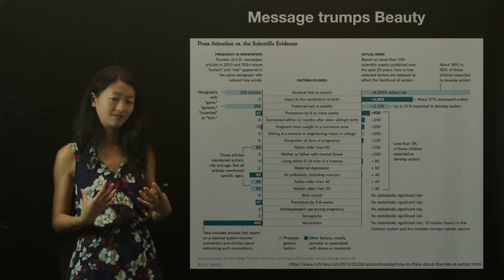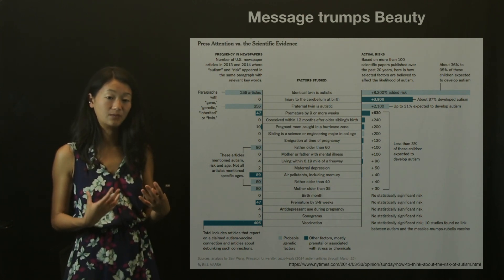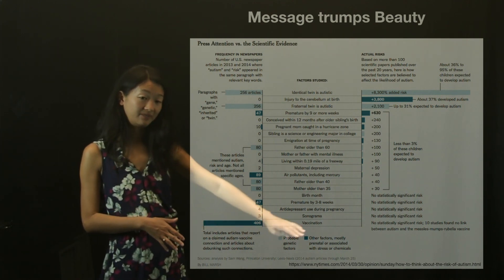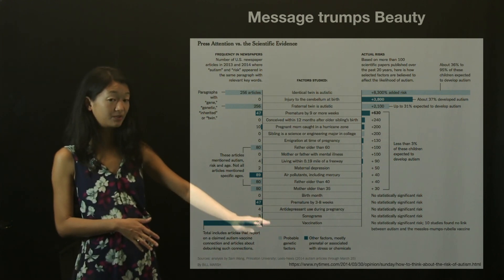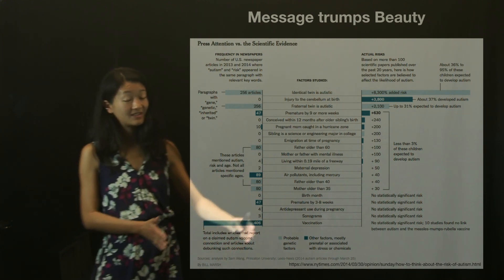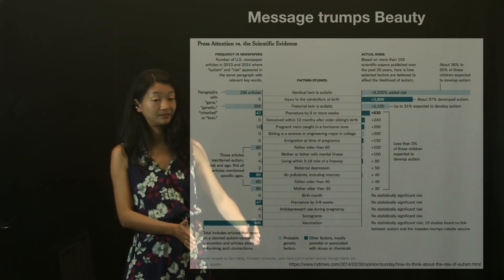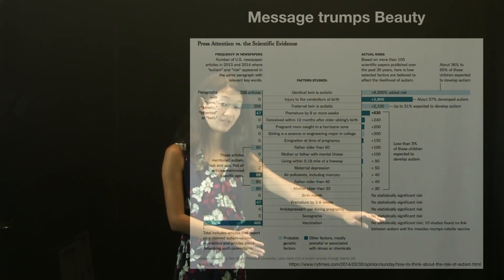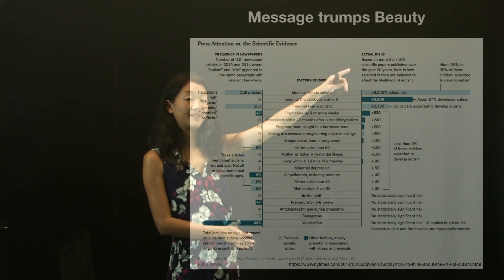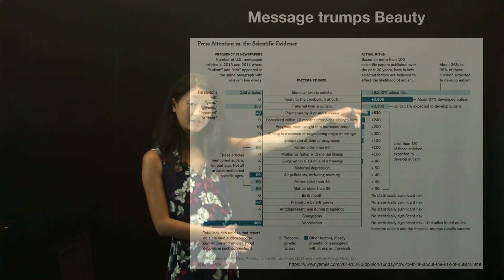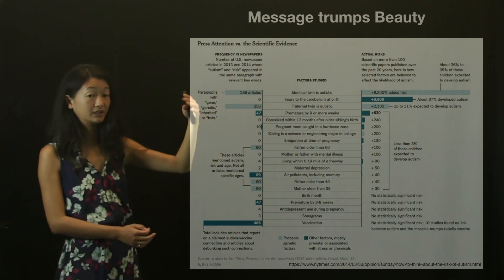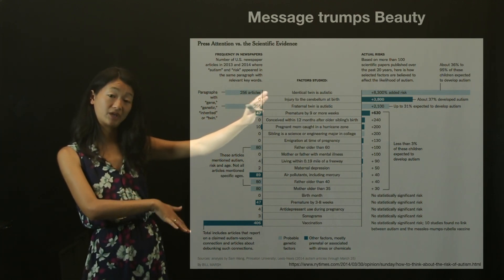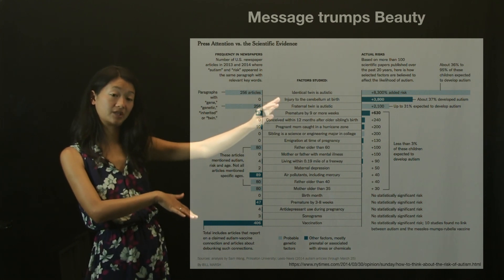What they want to convey is that the thing getting a lot of press attention is whether or not there's a link between vaccination and autism — this is covered a lot in the press — whereas there is no evidence in the scientific literature that vaccination causes autism. And there is a lot of evidence that other things cause autism, but they get disproportionately very little coverage in the press. This mismatch becomes really obvious when you have a data visualization like this, and you didn't need any fancy graphics or animations to convey it.